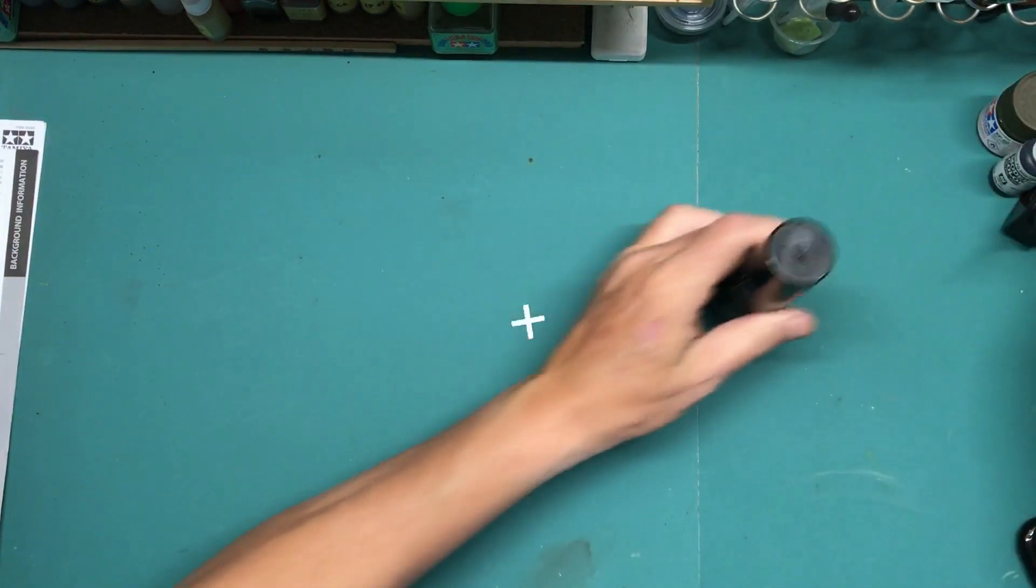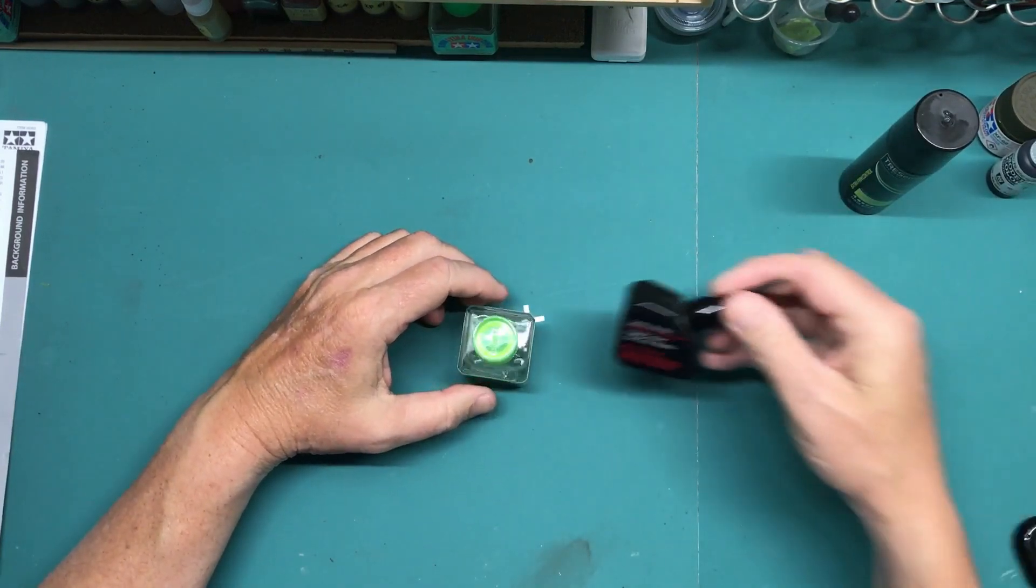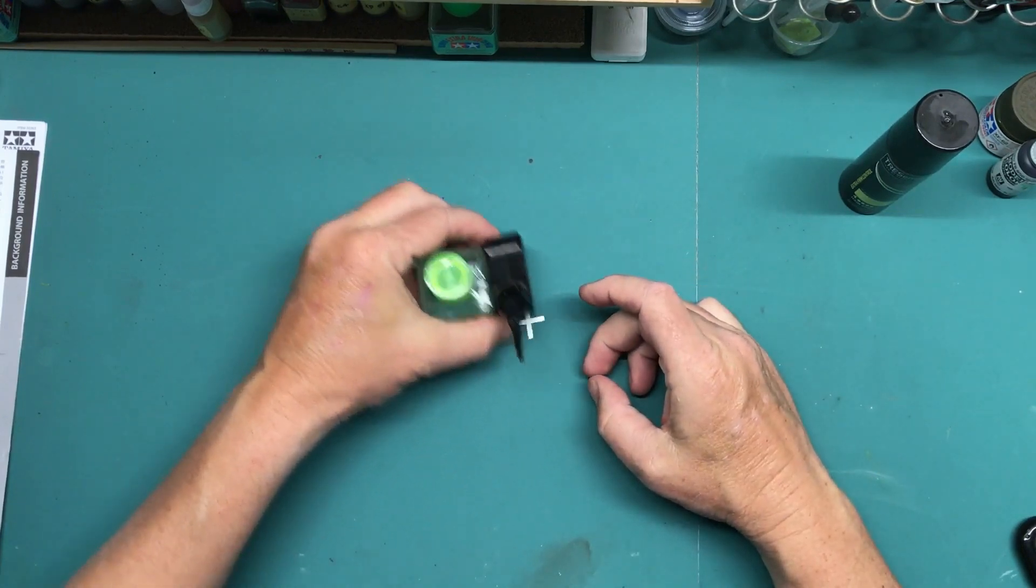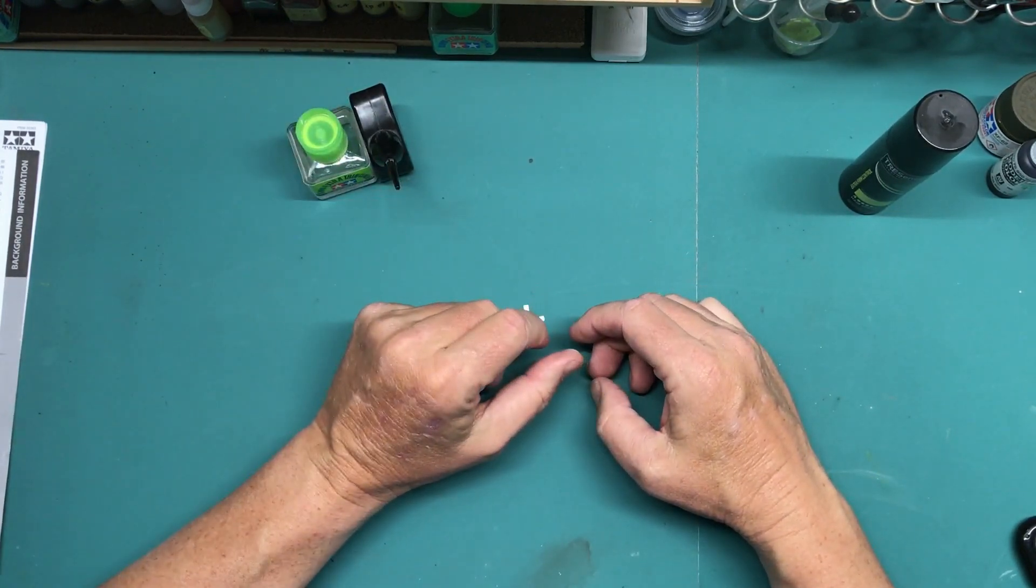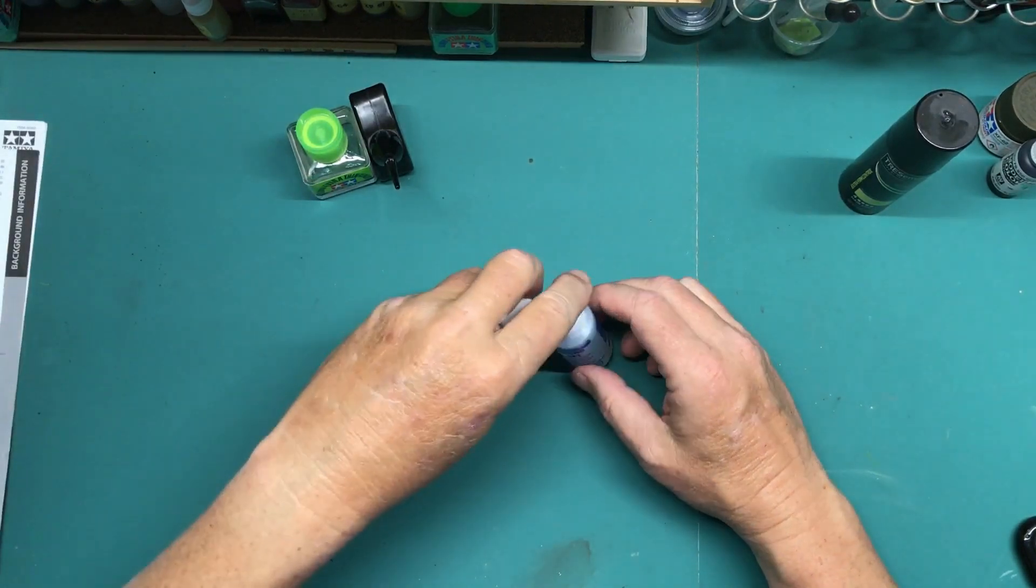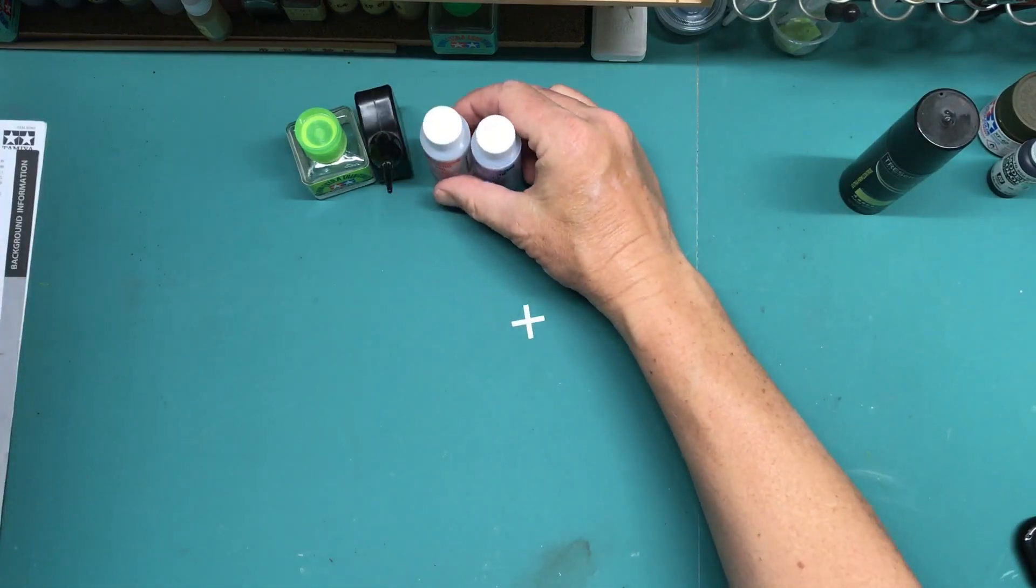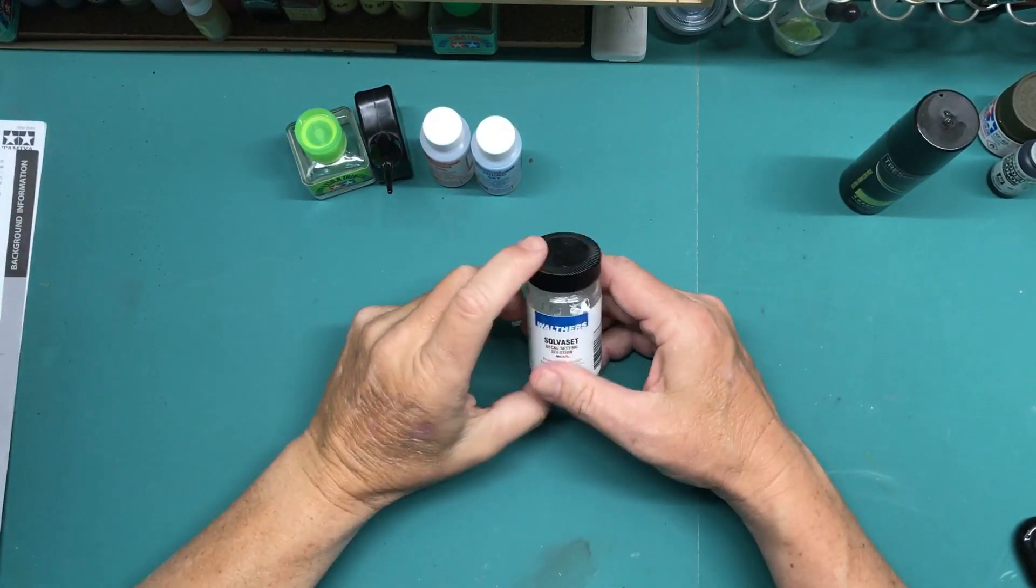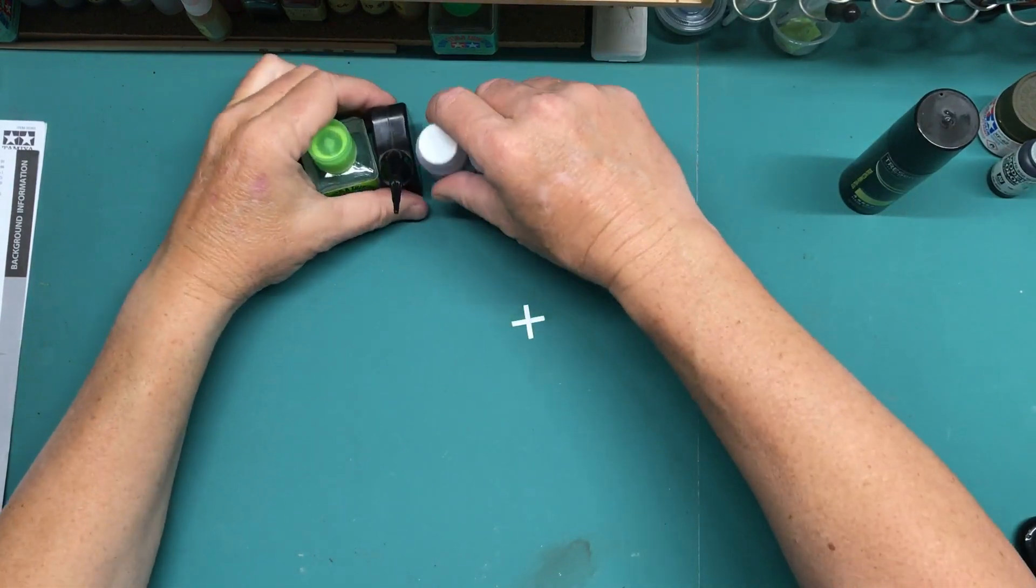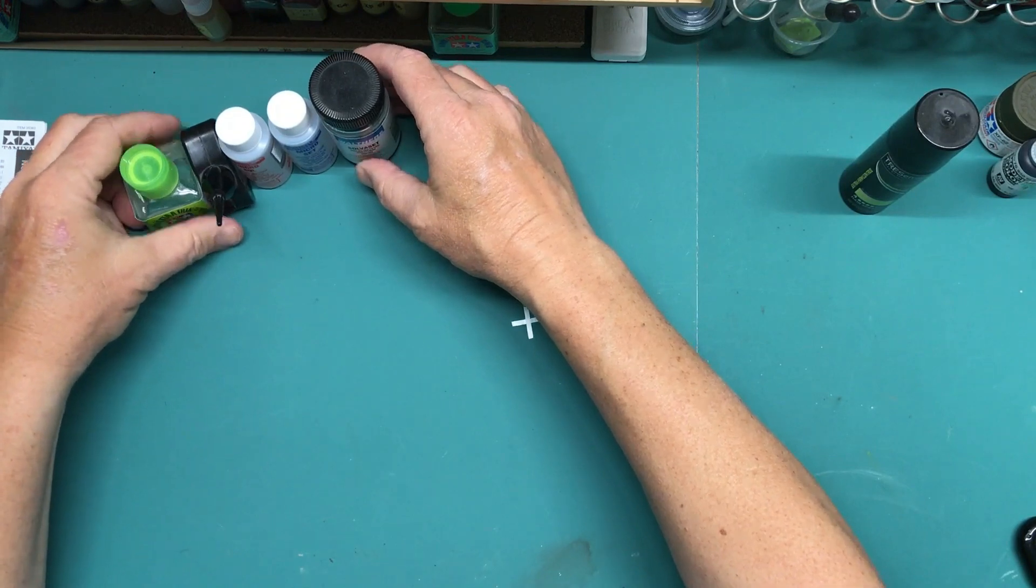Then as far as supplies, we've got the old Tamiya Extra Thin and Model Master Liquid, which is a little bit thicker, which I like to use for certain parts. I'll be using Microsol and Microset for the decals, and possibly depending on how the decals behave, Walters Solva Set for settling the decals in really well to get them to conform to details.